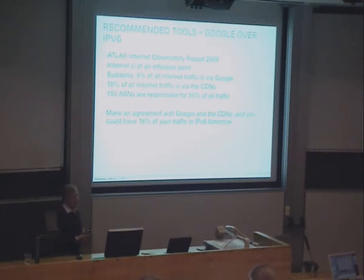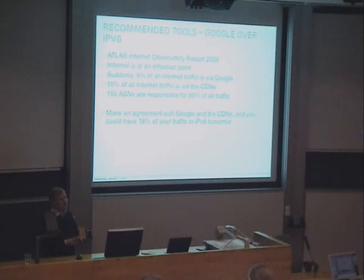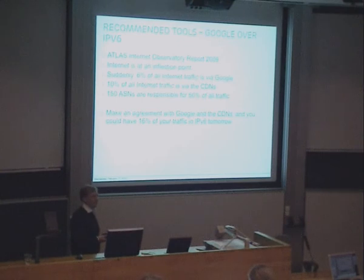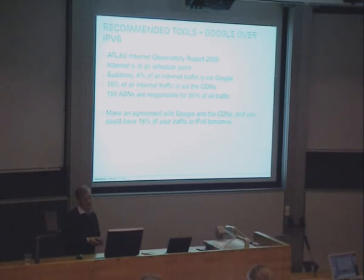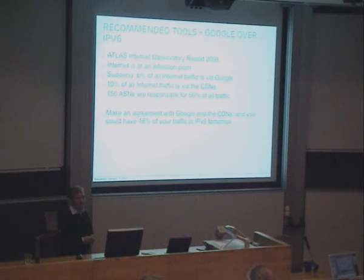If you actually needed to make deals with all the major internet traffic generators, that would mean deals with 150 different ASNs, which are responsible for 50% of all internet traffic. So getting real IPv6 traffic is not the problem — it's more or less a matter of you acting on that opportunity.